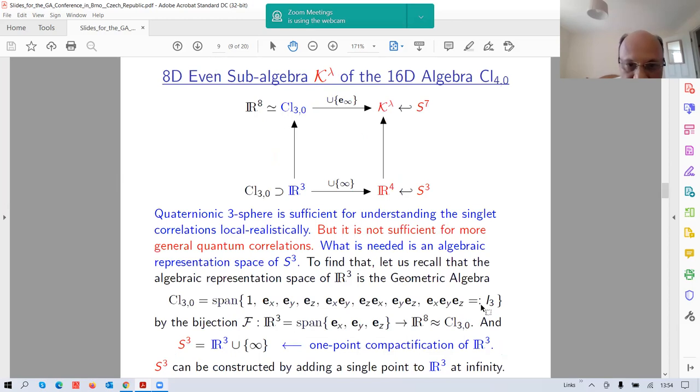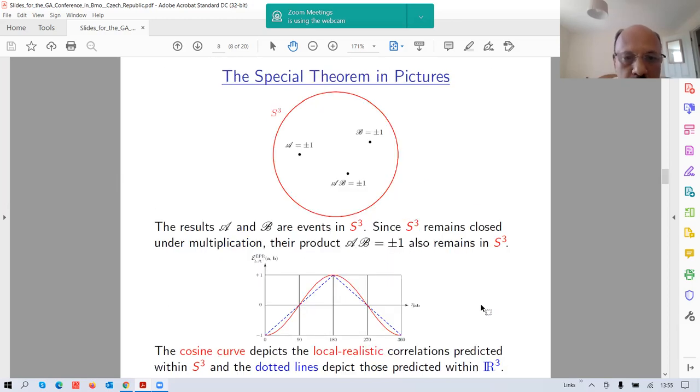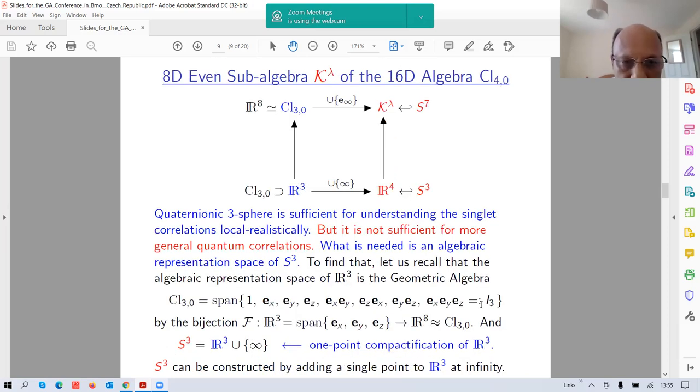However, in my approach, this graph has a completely different interpretation. The cosine correlations are actually local realistic correlation within S³, whereas the dotted lines are within R³. Bell's theorem is not affected if you believe that you live in R³. Remember that all the experimentalists only use vector algebra in R³. They never bothered to use anything else. Now I move on to a greater, a larger framework. The problem is that the three sphere, the quaternionic geometry is not sufficient to understand all quantum correlations.